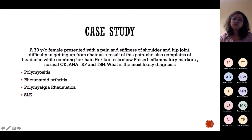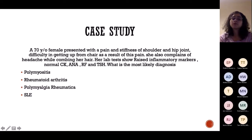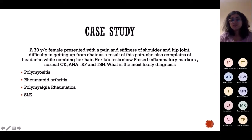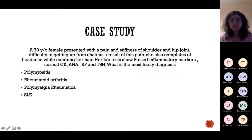Case study: A 70-year-old female presents with pain and stiffness of shoulder and hip joint, difficulty getting up from a chair, and headache while combing her hair. Lab tests show raised inflammatory markers, normal CK, ANA, RF, and TSH. There's pain and stiffness but no weakness — in polymyositis you get weakness and raised CKs. The headache while combing hair is a typical feature of GCA. Since GCA and PMR are associated in 50% of cases, the answer is PMR — polymyalgia rheumatica.